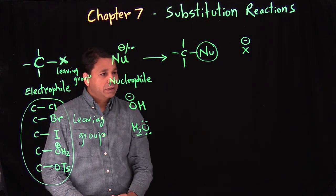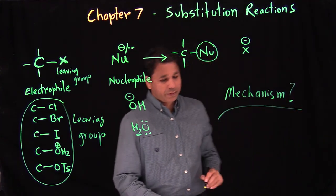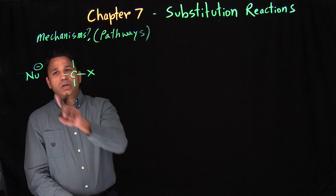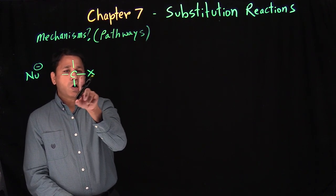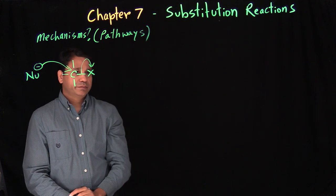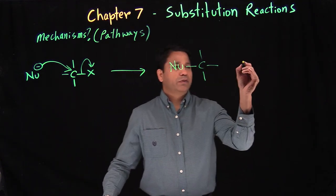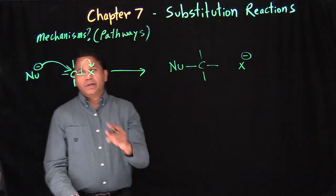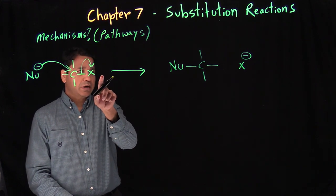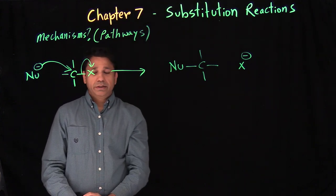Next, we look at the different pathways or mechanisms possible for this reaction. There are two possible mechanisms. In the first, the nucleophile attacks and the leaving group leaves at the same time — a concerted process. You can imagine throwing a rock at a tree so the apple falls off; attacking and leaving happen simultaneously.